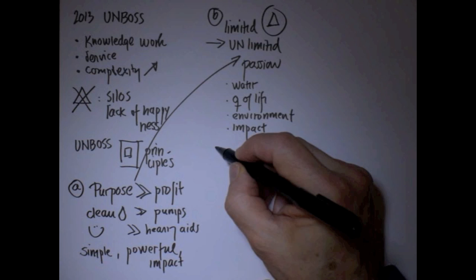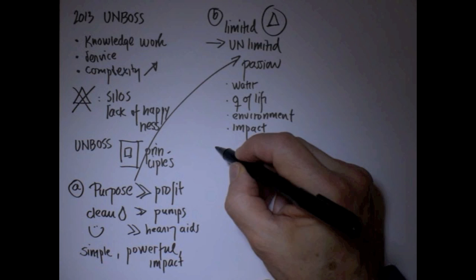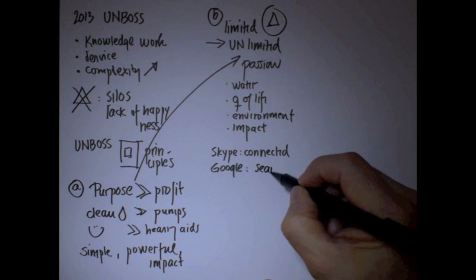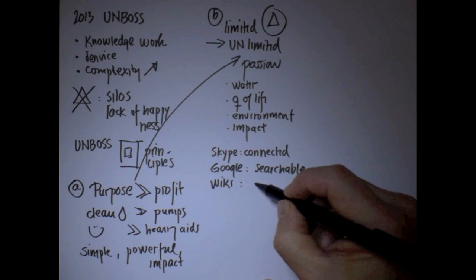Skype has a great passion, which is that we should all be connected for free throughout the world. Google has another passion, which is all information should be searchable. Wikipedia has another passion, which is that all knowledge should be put at the disposal of all of us. TED wants to spread ideas.